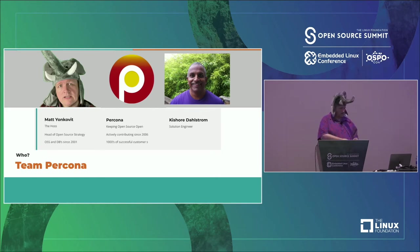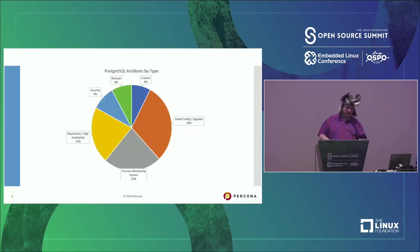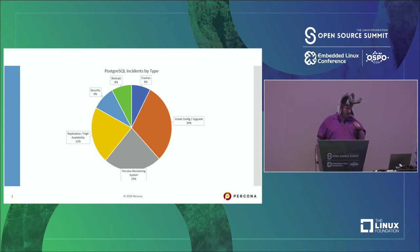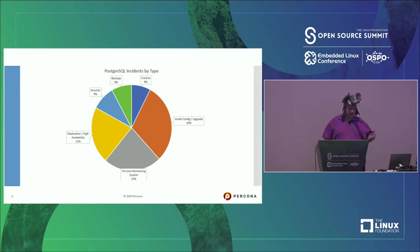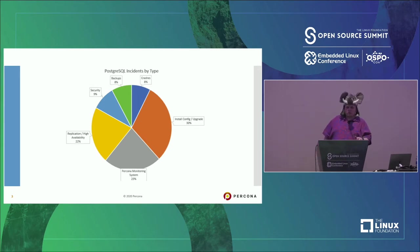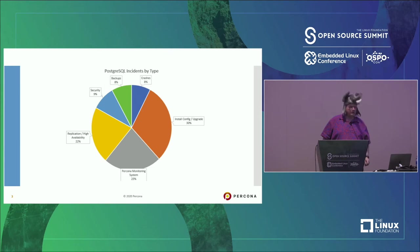Let's give you a breakdown of where we see the most issues. This is a graph of about 24 months where tickets are opened across our organization. You can see that replication lag and high availability are pretty high. Config and upgrades are also high. Monitoring covers things like how do I find out what's slow, what's happening. Then you see backups, crashes, and security. A lot of this is around design and getting the best performance out of the system.